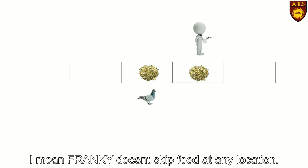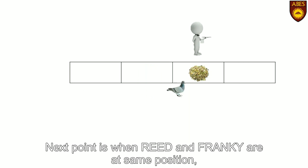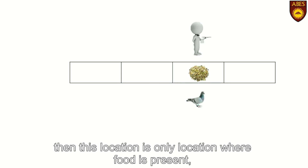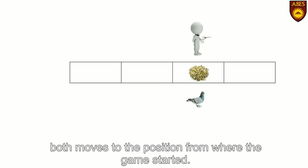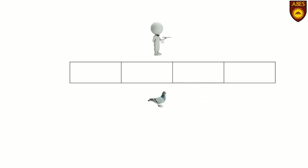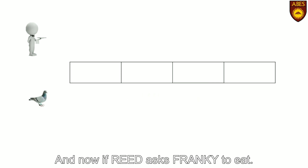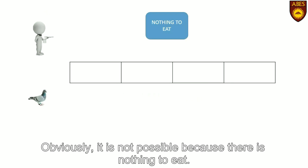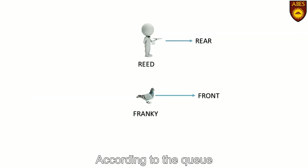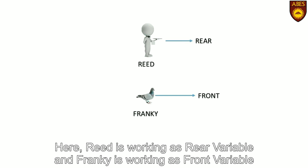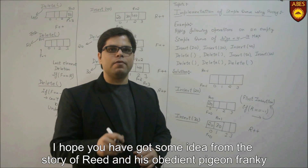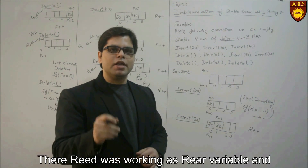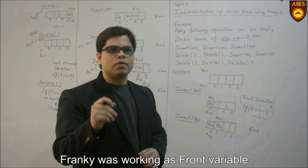When Reed and Frankie are at the same location, this is the only location where food is actually present. After eating food at this location, Frankie and Reed both move to the position from where the game started. If Reed asks Frankie to eat again, obviously it is not possible because there is nothing to eat. According to the queue, Reed is working as the rear variable and Frankie is working as the front variable. We will see how this example can be used to understand implementation of a simple queue.